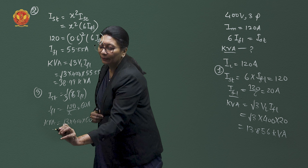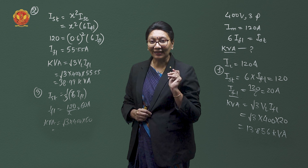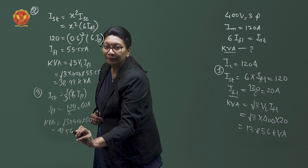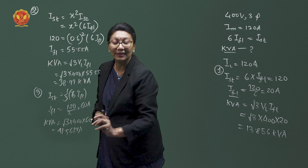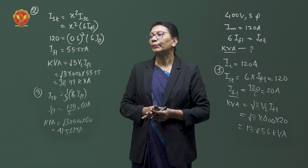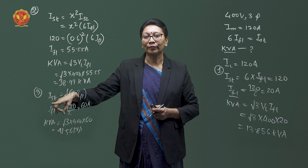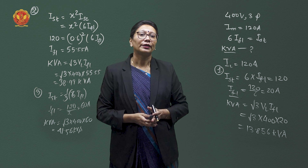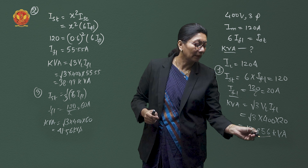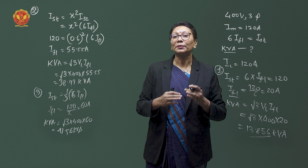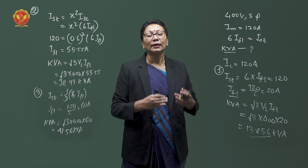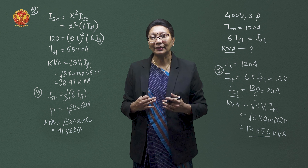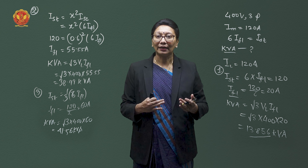The maximum permissible KVA rating with star-delta starting is root 3 times 400V times 60A, which gives 41.56 KVA. So if we need a motor rated more than this KVA, we have to opt for star-delta starting. The three methods — direct online at 13.85 KVA, auto transformer at 38.49 KVA, and star-delta at 41.56 KVA — can be compared using this numerical data to make a better decision.